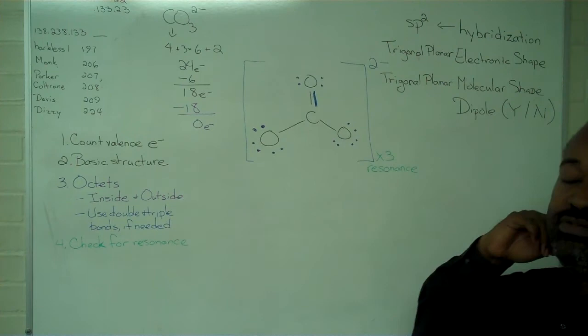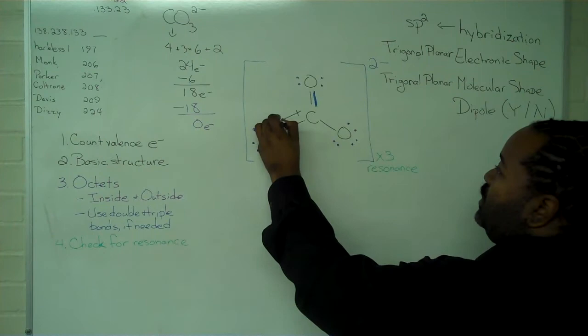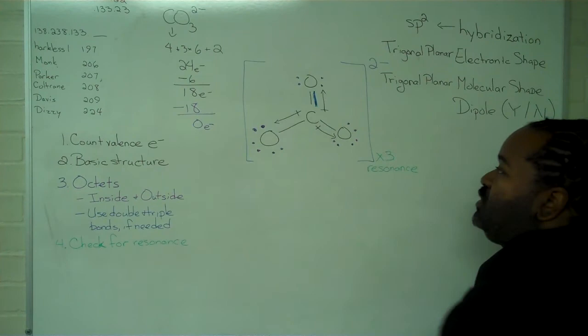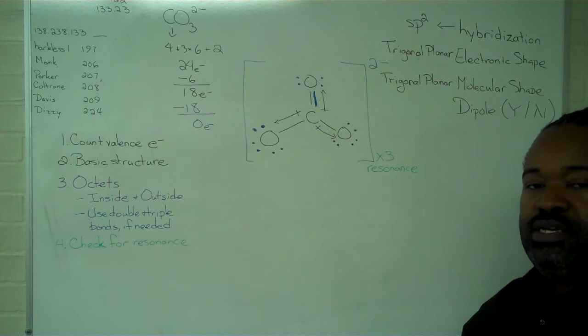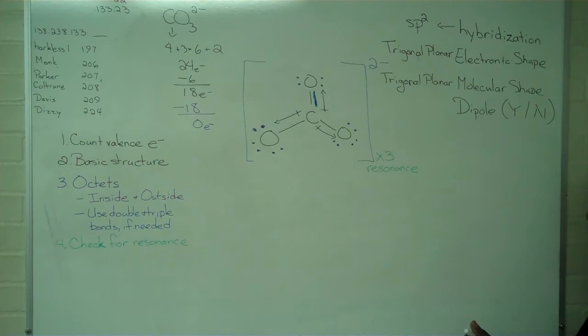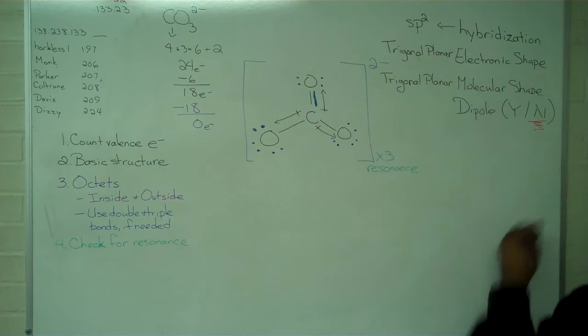And we can observe that we have individual dipoles here, because each bond between carbon and oxygen has oxygen as the electronegative one. And so the negative end of the bond is towards oxygen, and the positive end is towards carbon. But because these are all pointing in 120 degrees opposite each other, these will cancel out. So overall, we do not expect to see a dipole.